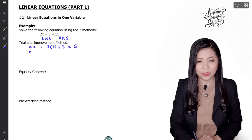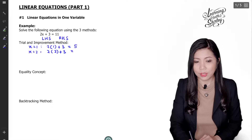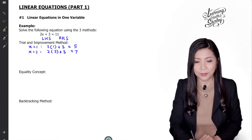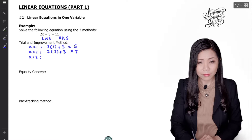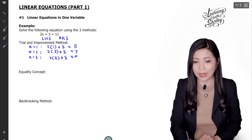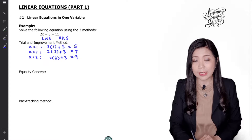Let's try x equals to 2. So 2 times 2 plus 3, that's 4 plus 3 equals to 7. 7 is not 11, therefore x equals to 2 is not the answer. Let's try x equals to 3. So 2 times 3 plus 3 — 2 times 3 is 6, and 6 plus 3 is 9. 9 is also not 11, therefore x equals to 3 is not the answer.